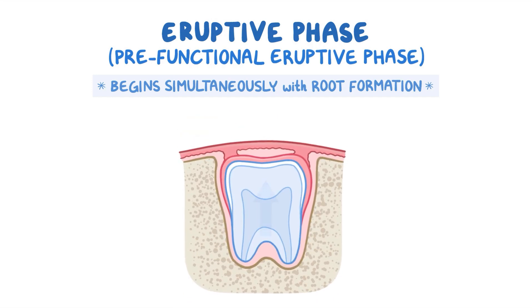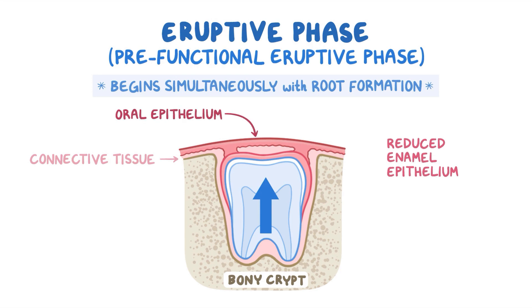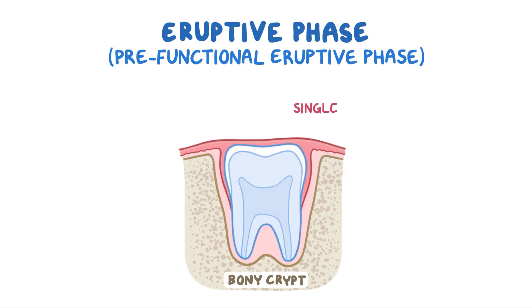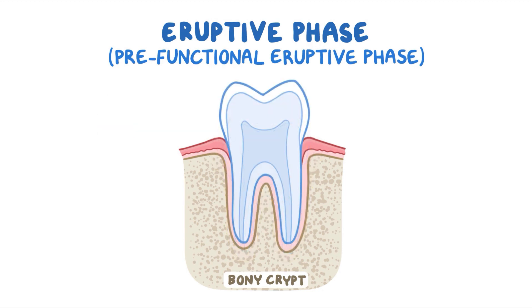The tooth germs then enter the eruptive phase, or the pre-functional eruptive phase, which begins simultaneously with root formation. The tooth ascends through the bony crypt and the connective tissue and finally comes into contact with the oral epithelium. The reduced enamel epithelium over the tooth crown then proliferates along with the overlying oral epithelium to form a single membrane, and this epithelium is pierced by the tooth to finally enter the oral cavity. The fused epithelium lining the sides of the tooth is now called the functional, or attachment epithelium. Through the rest of the eruptive phase, the tooth gradually rises into the oral cavity till it reaches the plane of functional occlusion.